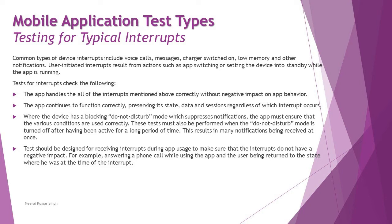Common types of device interrupts include a voice call while you're using the app, messages, charger disconnect, low memory, and other notifications. These can hold your data or kill your session. User-initiated interrupts result from actions such as app switching or setting the device into standby while the app is running.